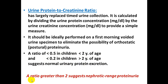A ratio of less than 0.5 in children under 2 years of age, and less than 0.2 in children over 2 years of age, suggests normal urinary protein excretion. A ratio greater than 2 suggests a nephrotic range proteinuria.